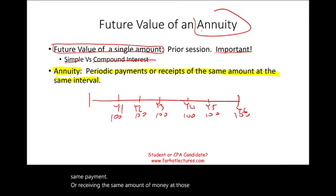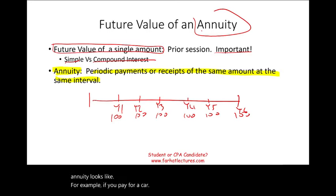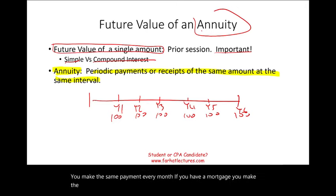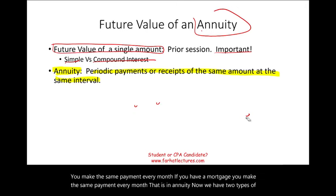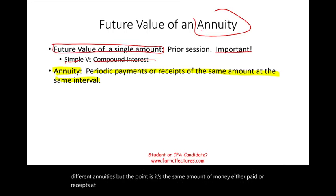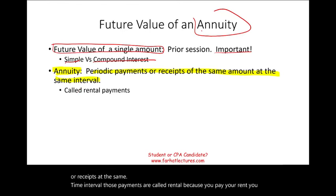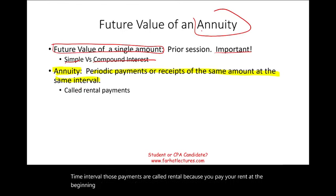For example, if you pay for a car, you make the same payment every month. If you have a mortgage, you make the same payment every month — that is an annuity. It's the same amount of money either paid or received at the same time interval. Those payments are called rent — because you pay your rent at the beginning of every month — just to help you remember.